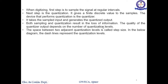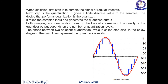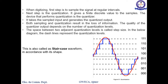The quality of the quantization output depends on the number of quantization levels. More quantization levels means more information is retained in the signal. The space between two adjacent quantization levels is called the step size. For a 3-bit quantizer you will have 8 quantization levels — levels 0 through 7. The signal is split into 8 parts, and the dashed lines represent the quantization levels. This is also called the staircase waveform because of its staircase shape.